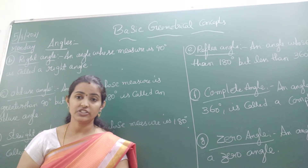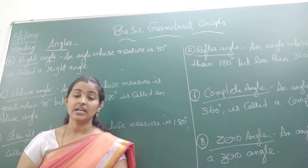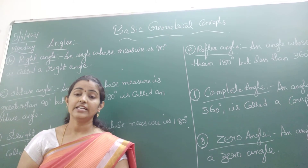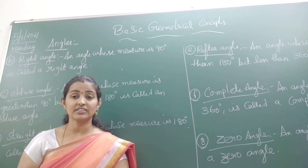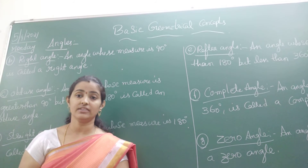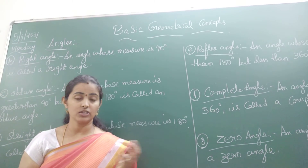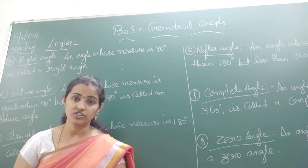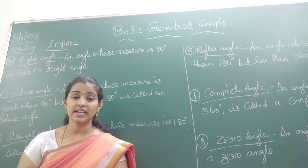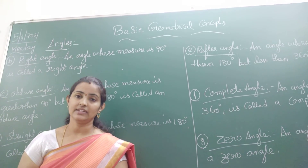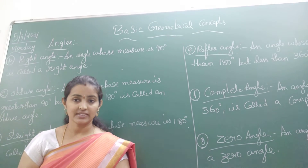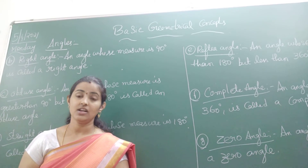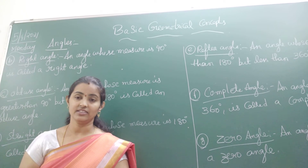Then coming to the ray — what do you mean by a ray? A ray which extends only one side, whether it may be the right side or the left side. Now coming to the next definition, that is a line. What do you mean by a line? A line which will be extended infinitely on both sides is said to be a line.